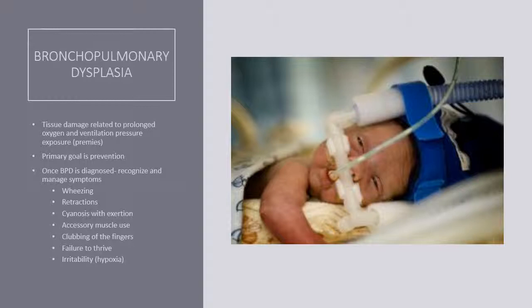If the child does develop bronchopulmonary dysplasia, it's important to recognize and manage the symptoms: wheezing, retractions, cyanosis with exertion, accessory muscle use, chronic hypoxia leading to clubbing of the fingernails and toenails, failure to thrive, and irritability from hypoxia. These children will have lifelong respiratory issues — they appear like chronic little COPD patients from the newborn age. Depending on severity, some are put on a list for lung transplants while others manage with medication and lifestyle adjustments.